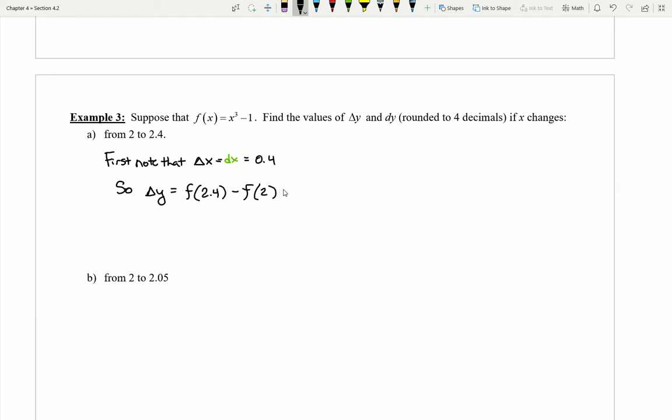If you go ahead and go to a calculator and try this out, we could see what values we end up with. If I plug in 2.4 and cube it and then subtract 1, rounded off to four places, I'm going to end up with a value of 7.